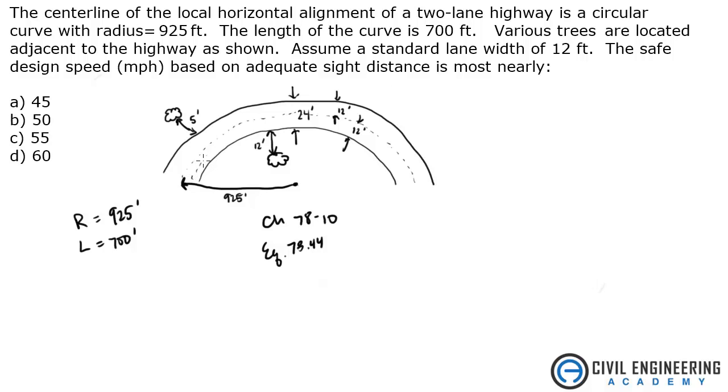We have to figure out what the radius of this inside lane is. We know this is 12 feet, so half of that is 6. So basically we just take 925, we'll call it a new radius, 925 minus 6 feet. So that's 919. That's our new radius that we're going to be using.